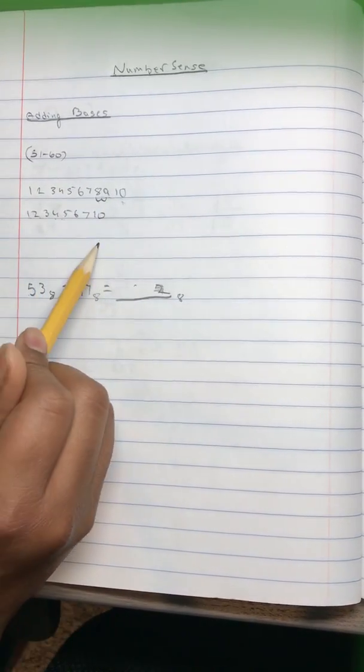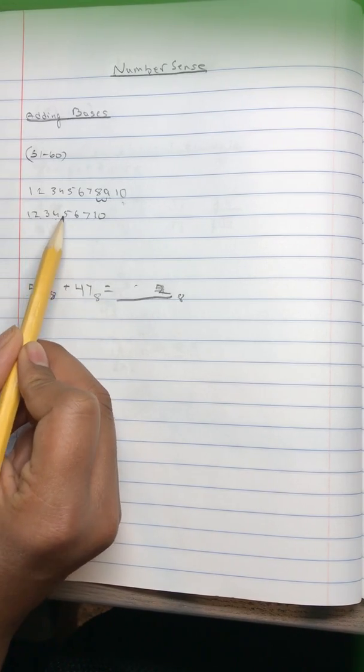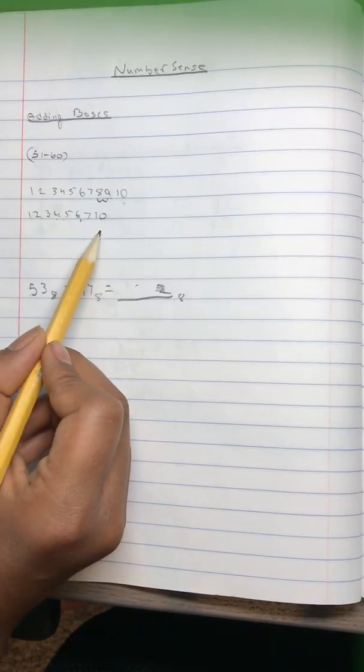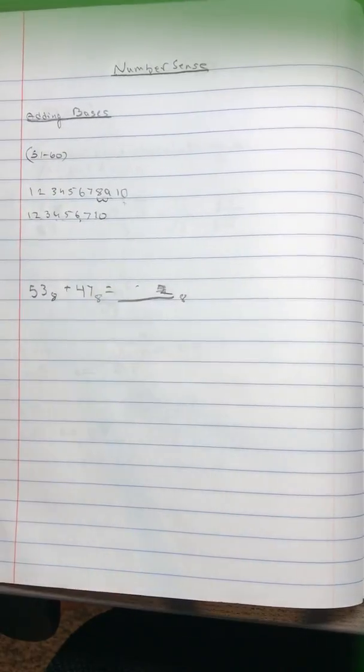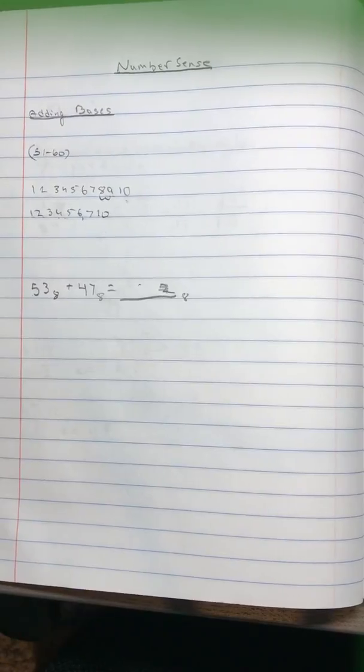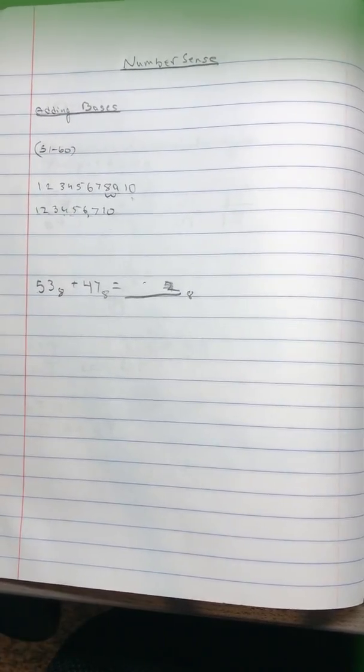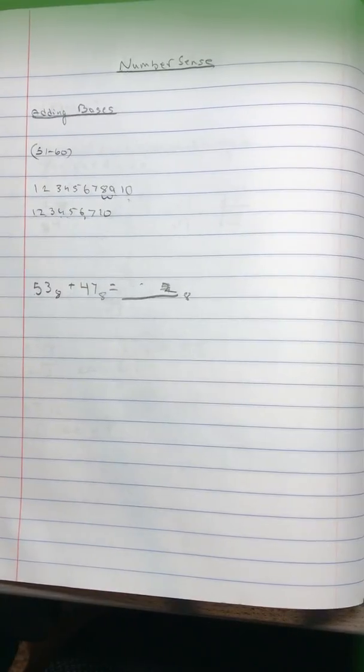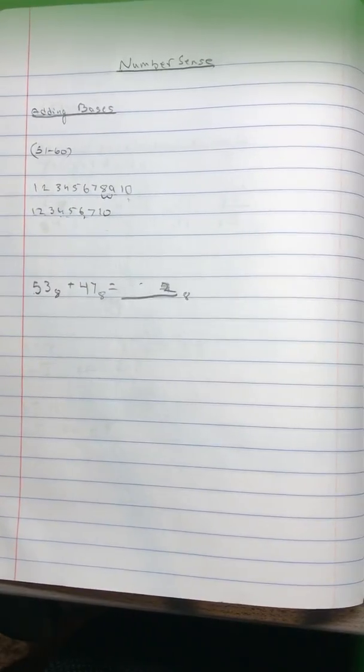But in base 8, what happens is 1, 2, 3, 4, 5, 6, 7. But after 7, instead of going to 8 like normal, it goes directly to 10. This is because after 7 it renames itself, it becomes two digits, and it keeps going like that: 11, 12, 13, 14, 15, 16, 17, 20, and it keeps going on like that.